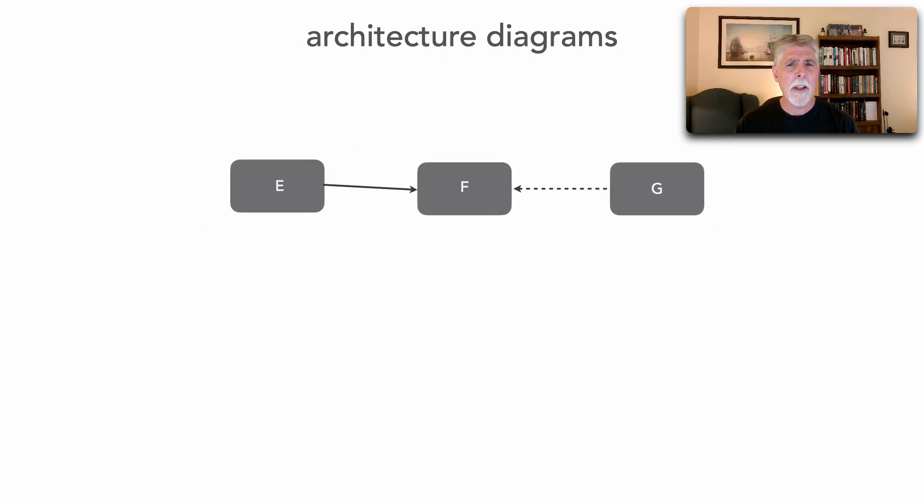So we saw in lesson 94 one of the effective guidelines and techniques within diagramming architecture is to leverage solid and dotted lines to indicate synchronous calls which are solid and asynchronous calls which are dotted. And this is what I use in architecture diagrams. It's an excellent guideline.